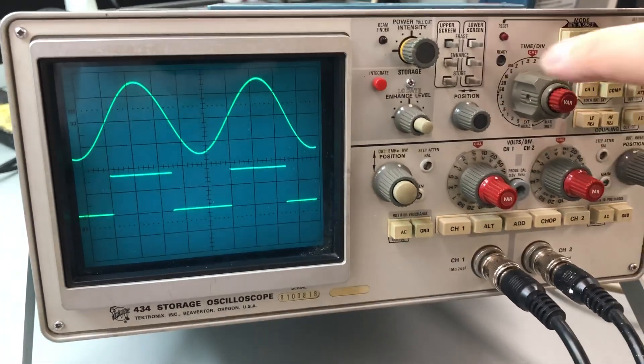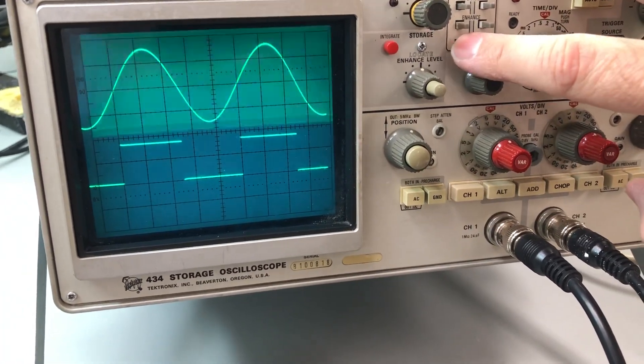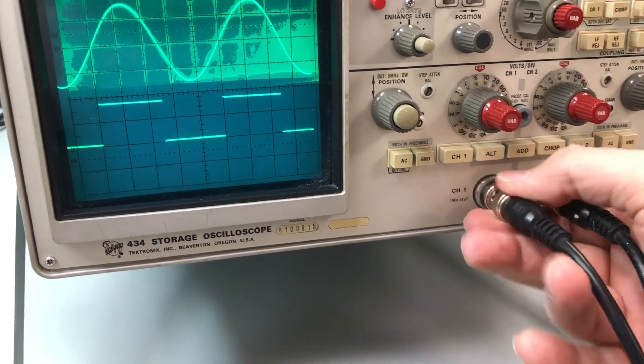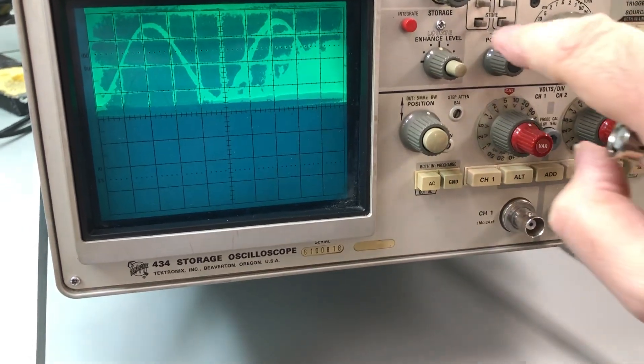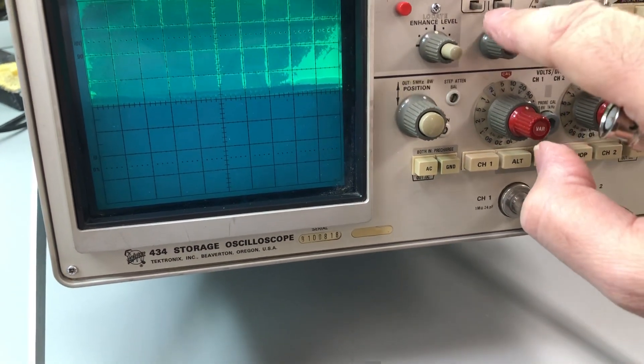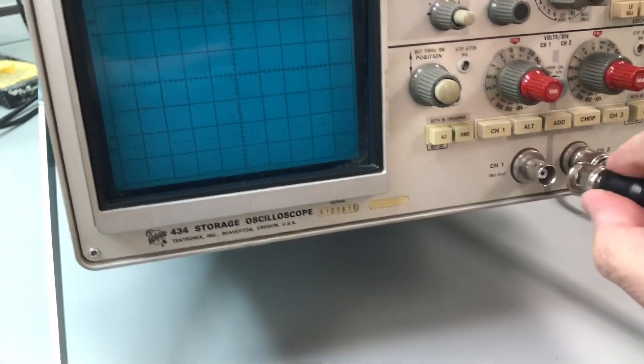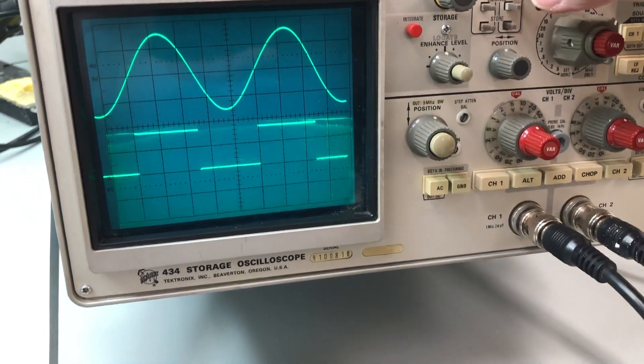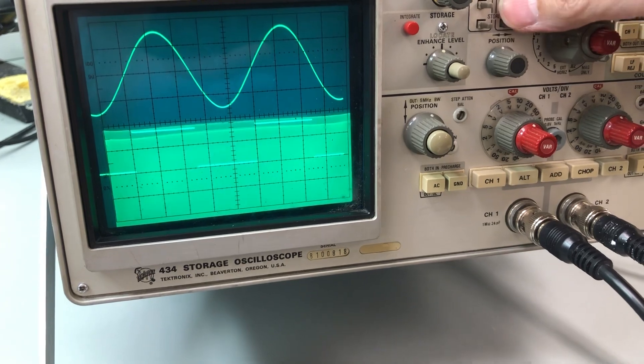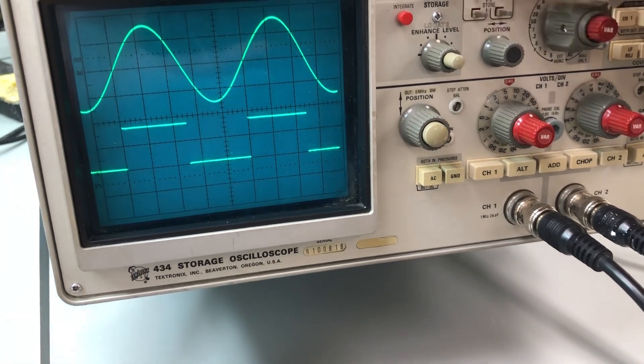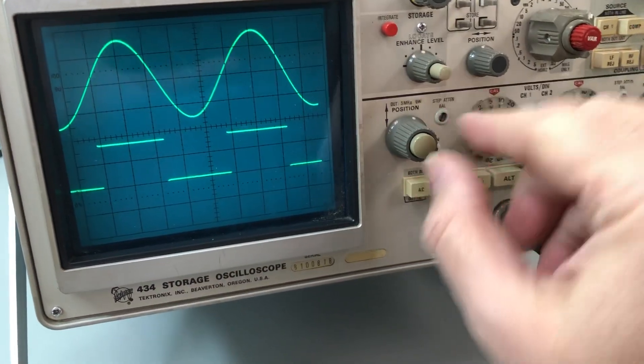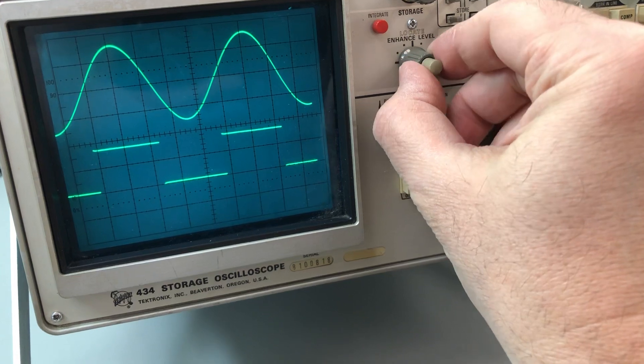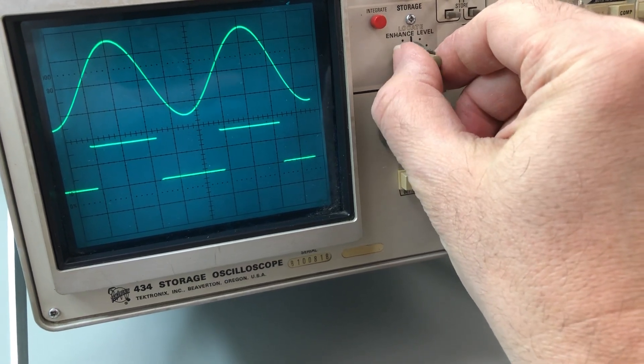It's kind of a little before my time as far as my experience with this kind of a scope. The other thing this has is an analog storage tube. So I can store channel one, remove the signal and it will retain. I can also erase that. I can store channel two, erase channel two. There's an enhance button. I'm not sure what enhance does. There's a control, I'm not sure what this control does. It says enhance level. I'm not sure what that does. There's an integrate button.